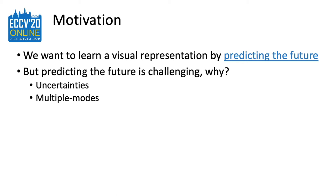Why? First, if we consider predicting the future at the pixel level, like the future frames, they are full of stochasticity like illumination changes. Second, the future may not always be predictable — it can have multiple modes.